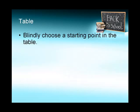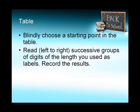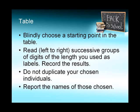Now we're going to go to the table step. The first step, which is critical, is to blindly—which means close your eyes—choose a starting point in the table. Read left to right successive groups of digits of the length you chose as labels and record your results. Do not duplicate your chosen individuals. You don't want anybody to get punished twice or rewarded twice, and then report the names of those chosen.